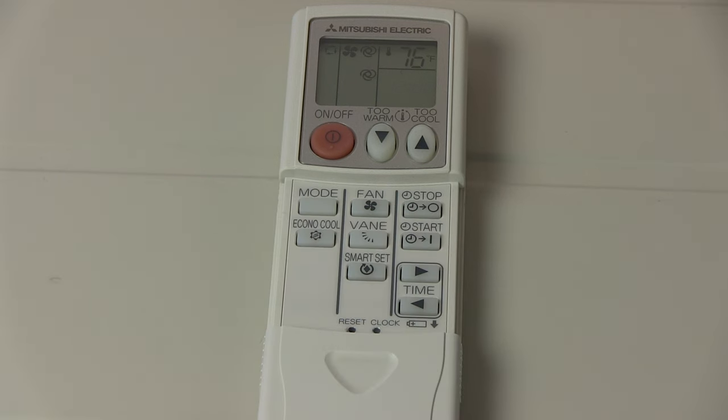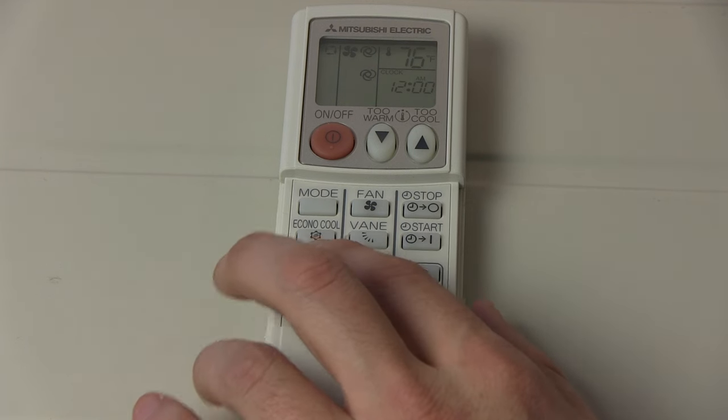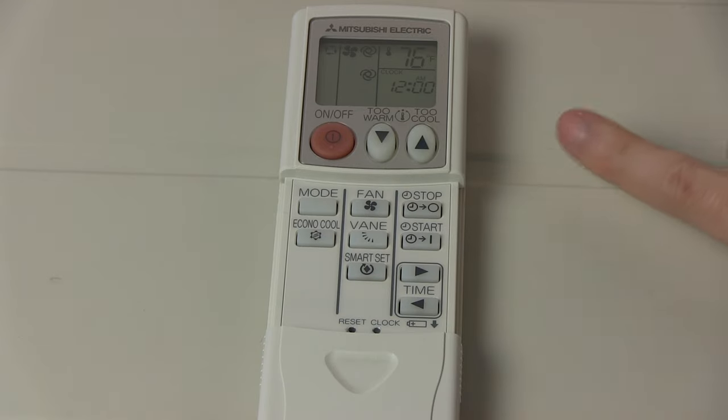Some buttons that we haven't talked about can be found in the homeowner's guide. These buttons are such as the Econocool, Smartset, and your timer.